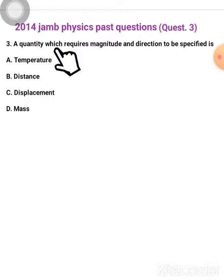And from the examples, you can see that temperature here is a scalar quantity. Distance is a scalar quantity. But this displacement is a what? It's a vector quantity. This mass is a scalar quantity.